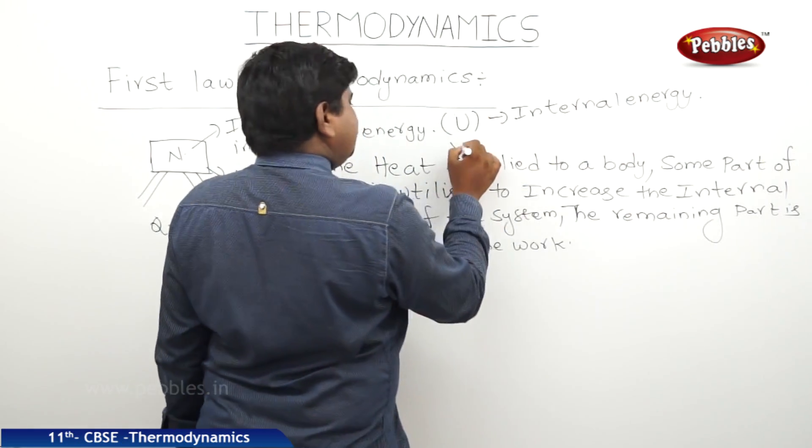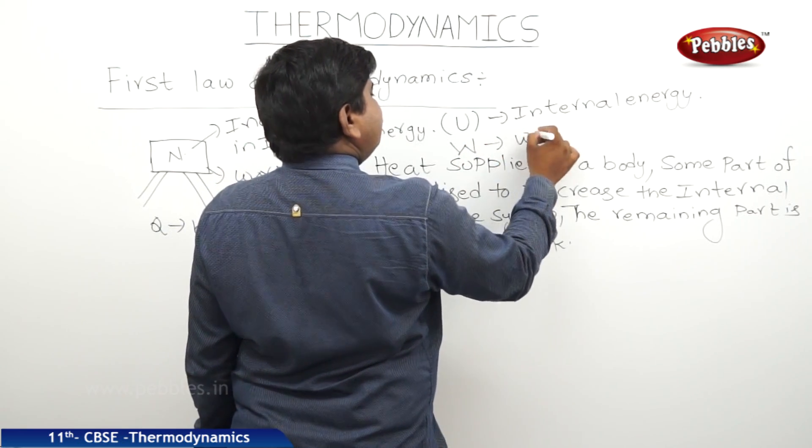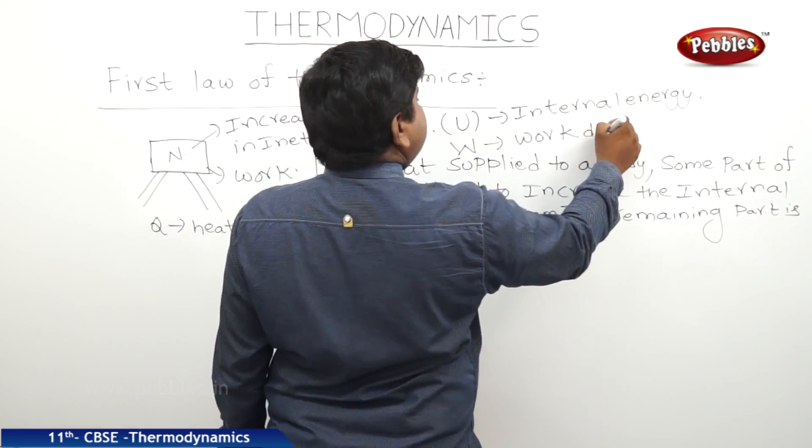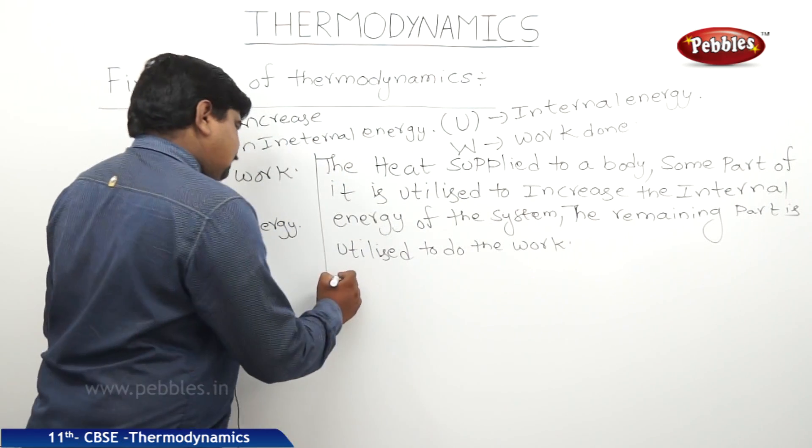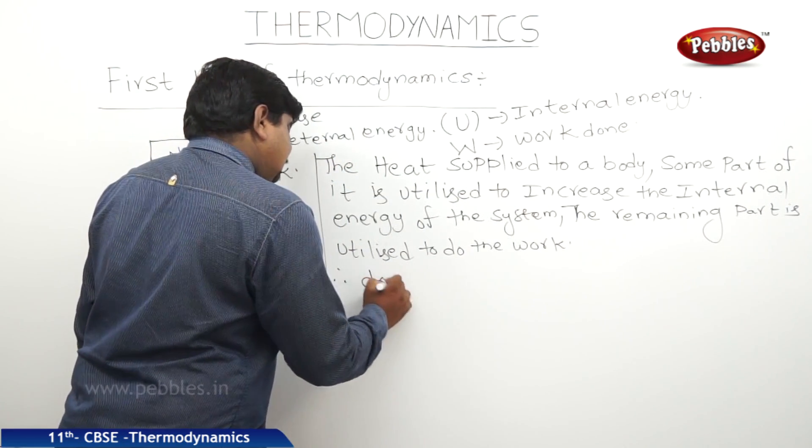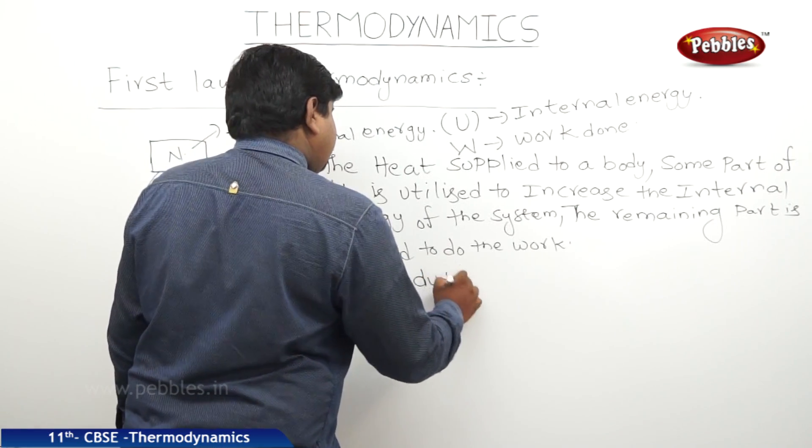And the work is symbol W. So the equation is DQ is equal to DU plus DW.